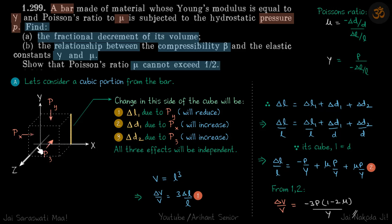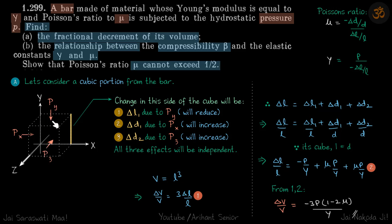The cube is subjected to pressure p from everywhere. We take it into three directions: px from one side, py from the top, and pz from the front. Their magnitudes are the same — these are just indicators of the direction we are talking about. px acts from both sides, py from top and bottom, and pz from front and back.